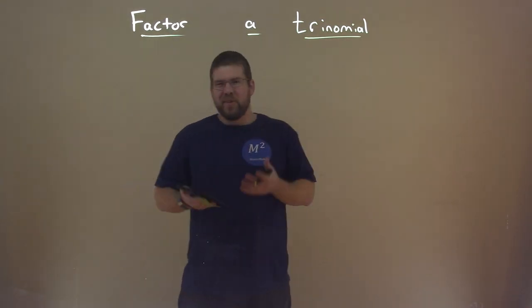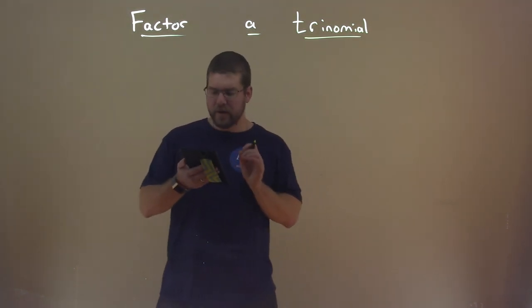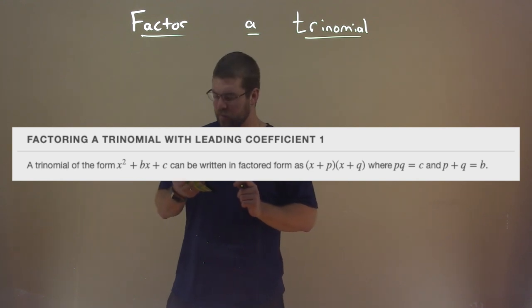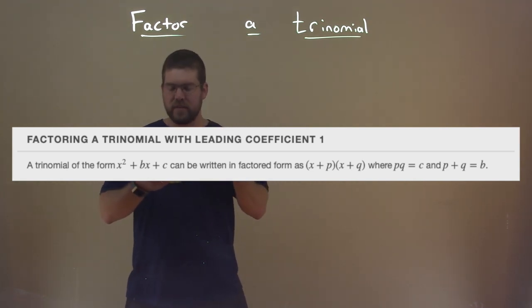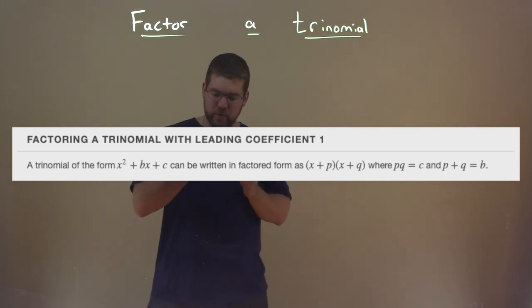What's our definition for factoring a trinomial? Factoring a trinomial with a leading coefficient of 1 is this: A trinomial of the form x squared plus bx plus c can be written in factored form as x plus p times x plus q, where pq equals c and p plus q equals b.